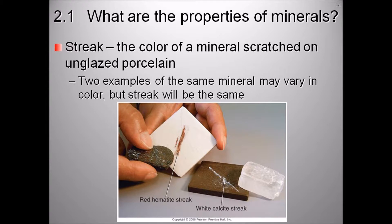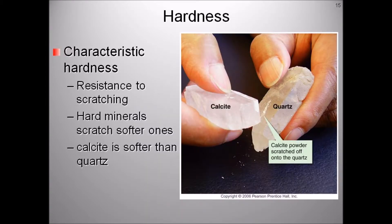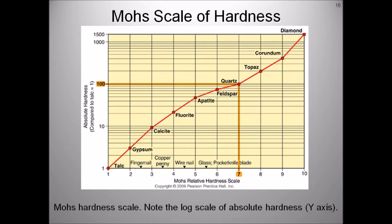Hardness is a measure of resistance by scratching. Hard minerals will scratch softer ones. The mineral calcite is softer than quartz, so when you scratch quartz against calcite, the quartz will leave a scratch mark on the softer calcite. The German mineralogist Friedrich Mohs devised a quantitative scale of relative mineral hardness. The softest mineral, talc, has a hardness of 1, and diamond, the hardest mineral, has a hardness of 10. The scale was standardized to quartz at number 7 on the Mohs scale, which is 100 times harder than talc. Generally, hard minerals at 5.5 and above on the Mohs scale will scratch glass but cannot be scratched by a knife blade or masonry nail. Soft minerals will not scratch glass and can be scratched with a knife blade or masonry nail.